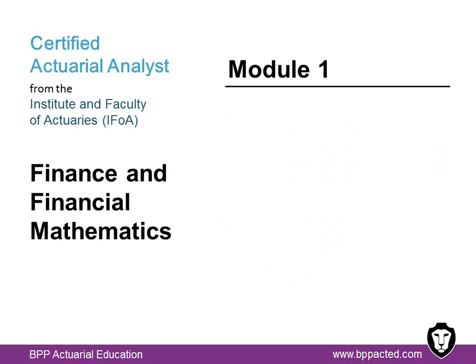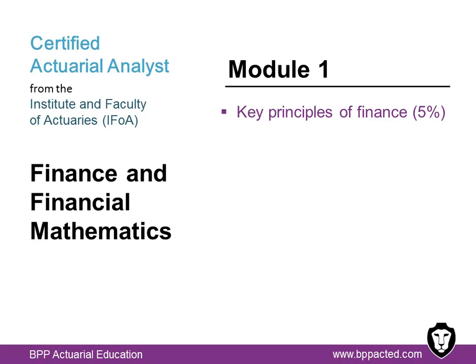Module 1 is finance and financial mathematics. It's a two-hour exam plus 15 minutes of admin time, administered by Pearson VUE, consisting of 65 multi-choice questions. It is recommended that you spend between 125 to 150 hours of study before you are ready to sit the exam. The syllabus covers eight topic areas, beginning with the key principles of finance, such as agency theory and maximizing shareholder wealth.